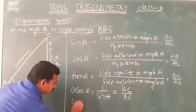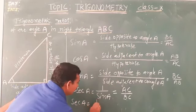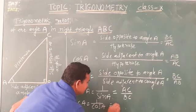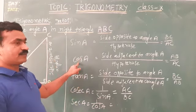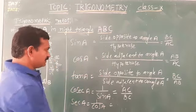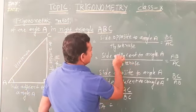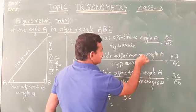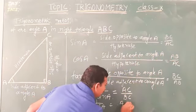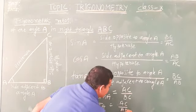Secant A is the reciprocal of cos A, that is 1 by cos A. So secant A equals hypotenuse divided by the side adjacent to angle A, which in this triangle is AC by AB.